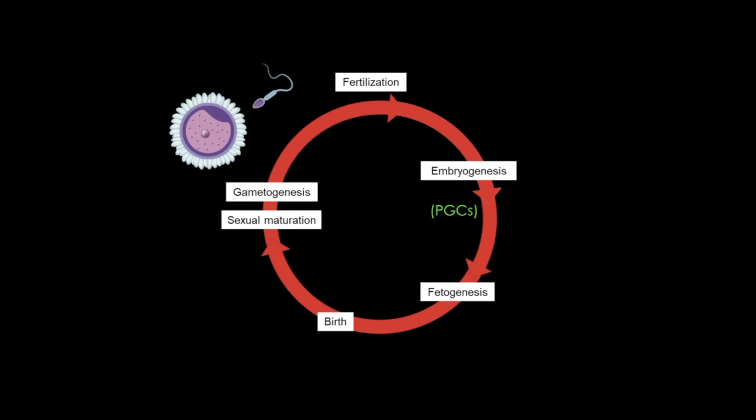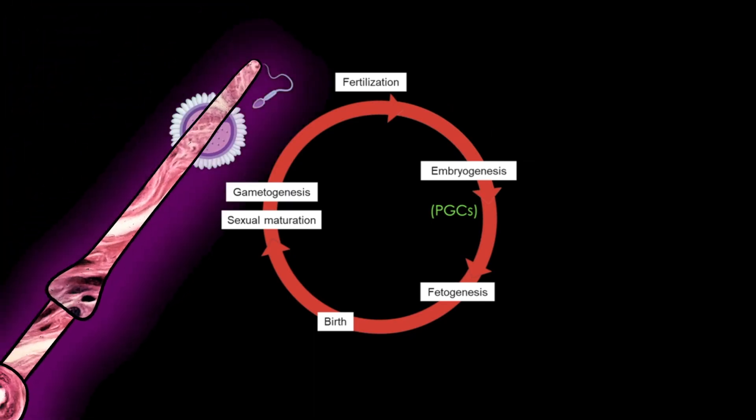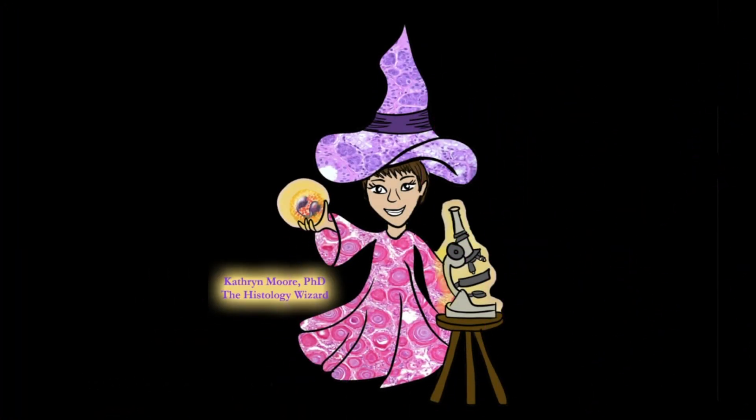So that's it for gametogenesis — the formation of sperm and oocyte. Fertilization is up next, where I'll cover the union of the oocyte and the sperm to form the zygote and talk about the events of the first two weeks of embryogenesis. Be sure to check out my videos on fertilization and gastrulation. Thanks for stopping by.